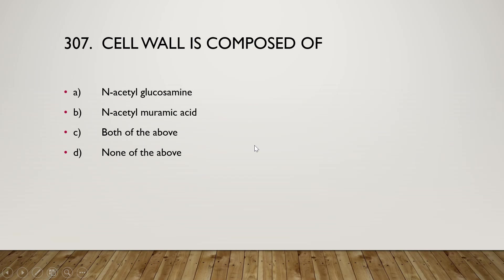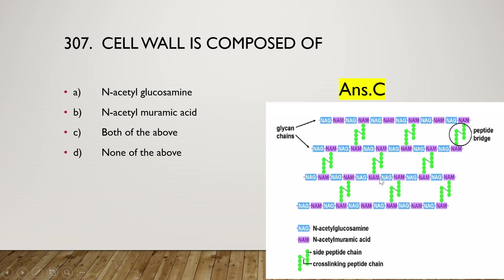The next question: cell wall is composed of N-acetyl glucosamine, N-acetyl muramic acid, both of the above, or none of the above. The right answer is option C — both. NAG (N-acetyl glucosamine) and NAM (N-acetyl muramic acid) are both required for peptidoglycan composition. They join alternately to form the peptidoglycan layer, and NAM has a peptide side chain attached. These peptide chains are cross-linked by a glycine bridge.